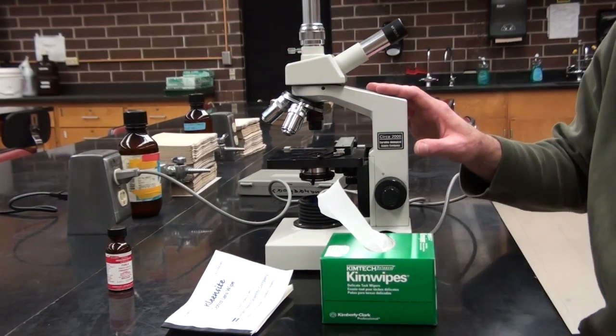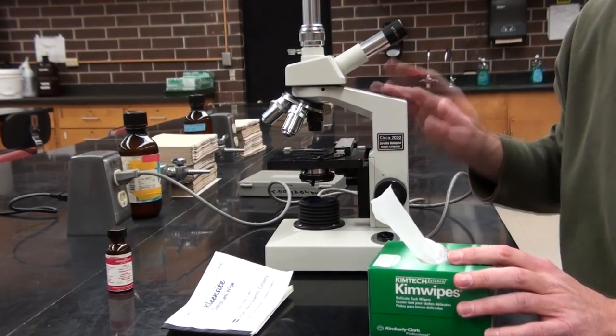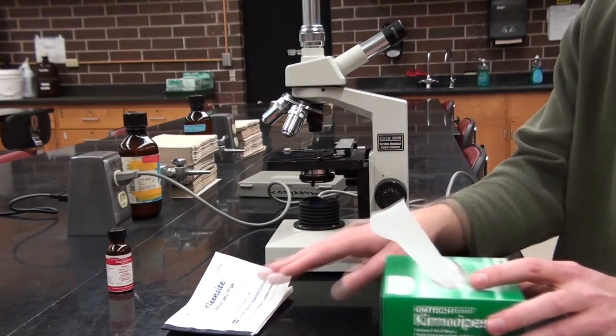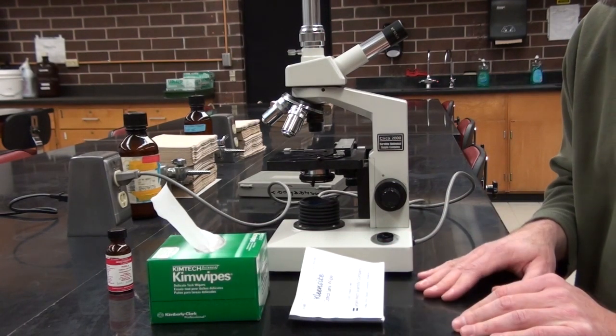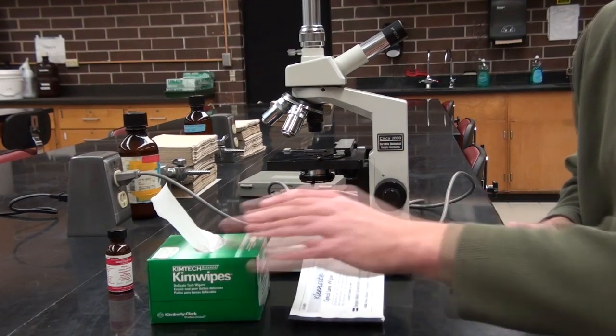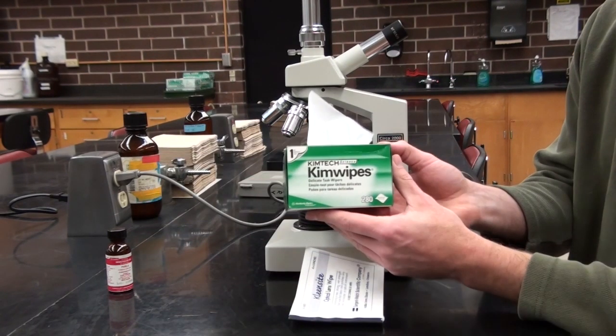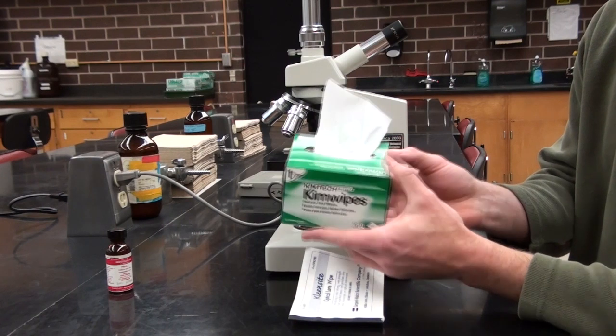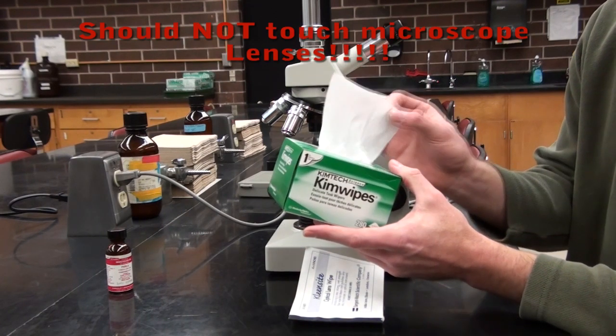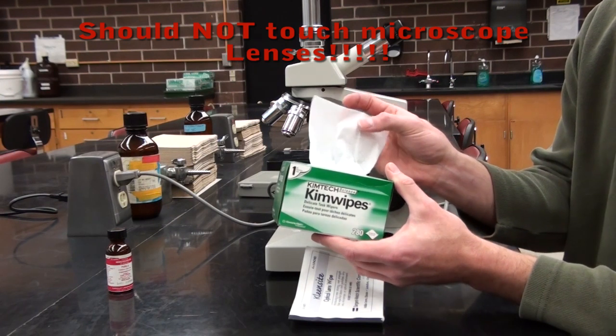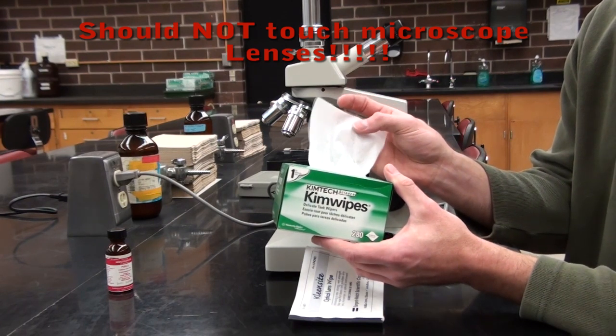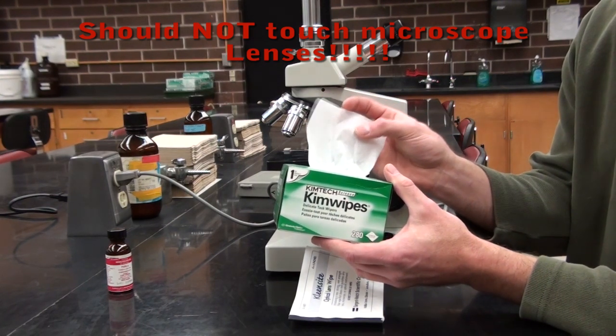Getting ready to use the microscope, make sure it's always plugged in. There are two types of papers you'll see within the laboratory, and these are important to keep track of. This one, which we call chem wipes, will not touch anything on the microscope. This would be a no-no. The reason is there tends to be little glass particles or rough sections that could actually scratch the lens.